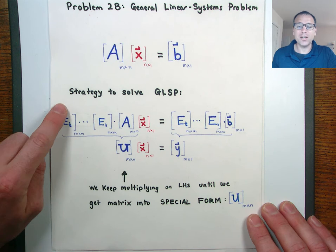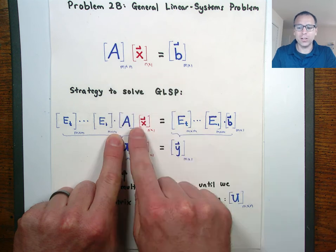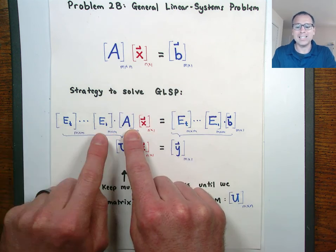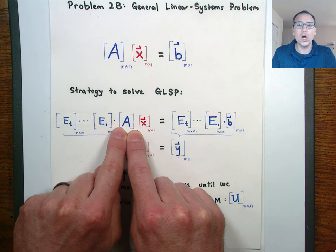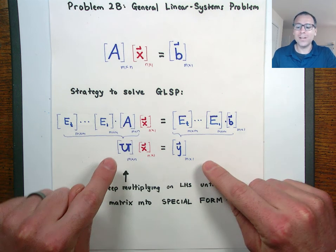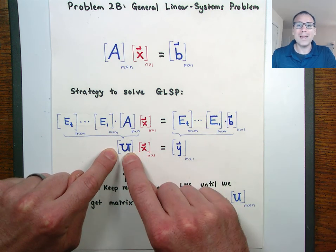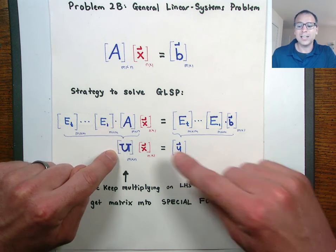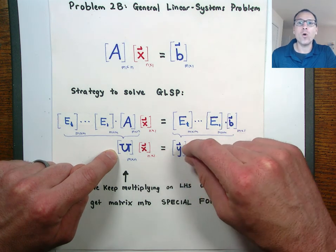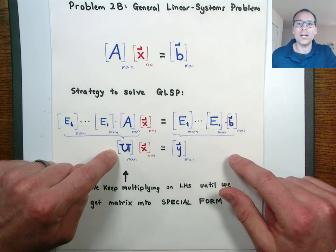Our main strategy for solving general linear systems problems is to manipulate the original system by multiplying on the left-hand side by a sequence of elementary matrices. In other words, when we multiply on the left, we're manipulating rows of the original modeling matrix A. We do this until we get the entire system into special form Ux equal Y, where the matrix U is in either REF or RREF. In this video, we're going to give formal definitions to those features.